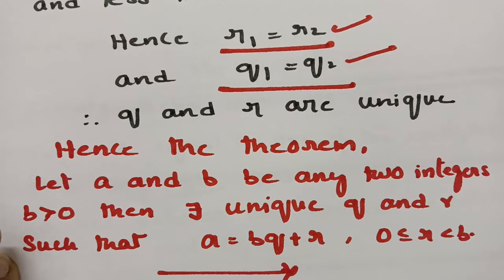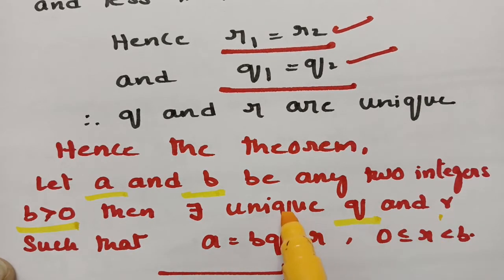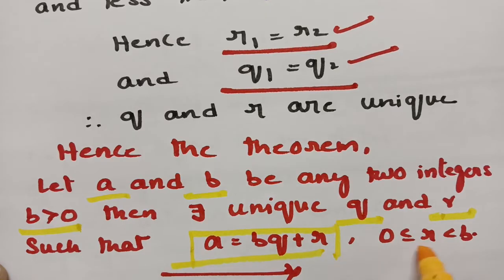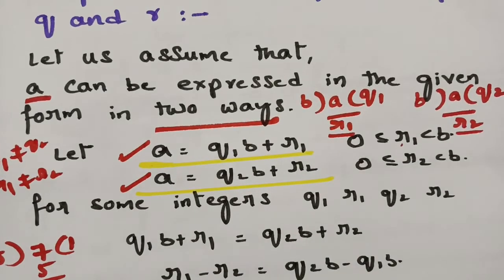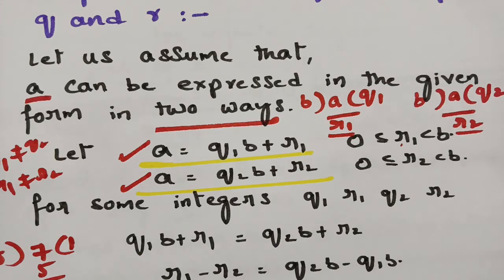Hence the theorem: let a and b be two integers, b is positive, and there exists a unique quotient and unique remainder such that a = bq + r, where 0 ≤ r < b. This is the division algorithm. If you understand each and every step it will be very easy to go through all problems in number theory. I hope you are watching this useful video. The well-ordering principle is also a very important concept in number theory — please watch that video as well. Please watch the playlist; many videos are uploaded for your preparation.